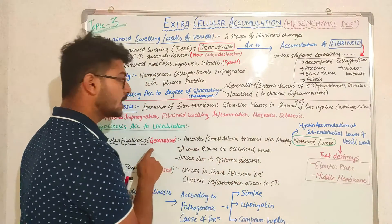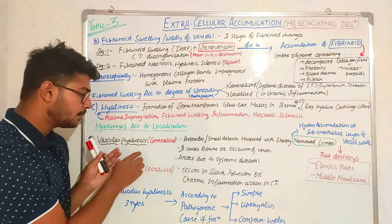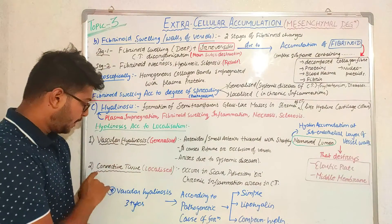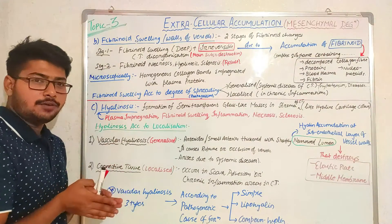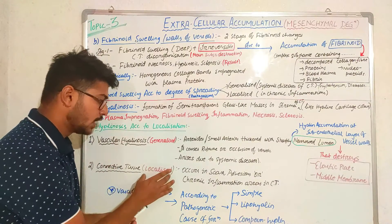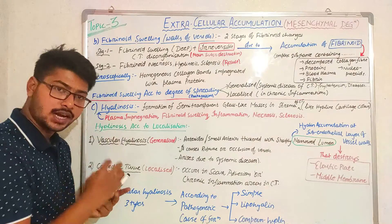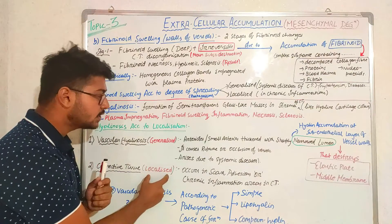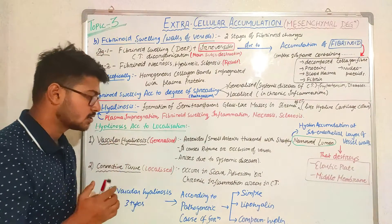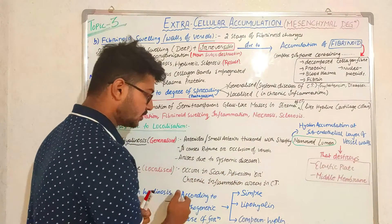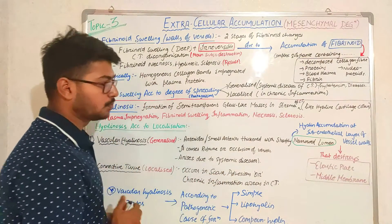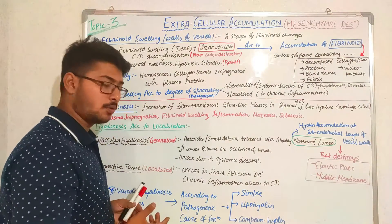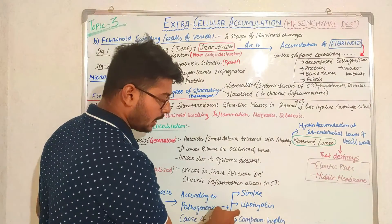Vascular hyalinosis arises due to systemic diseases and is generalized — present all over the body. Connective tissue hyalinosis is localized, occurring in scars, radiation injuries, or chronic inflammations of the connective tissue. Vascular hyalinosis can occur in three types according to pathogenic causes: simple, lipohydrate, and compound hyaline.